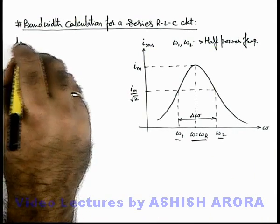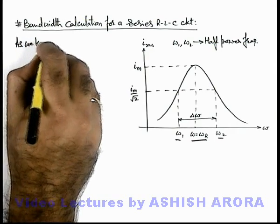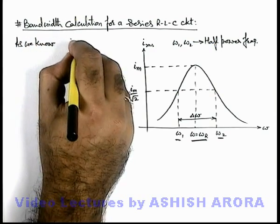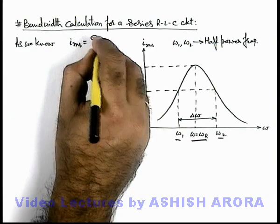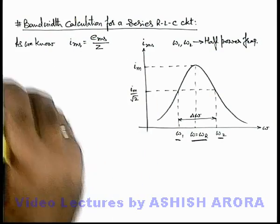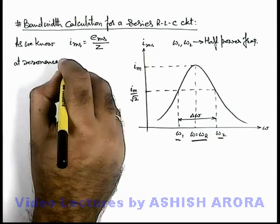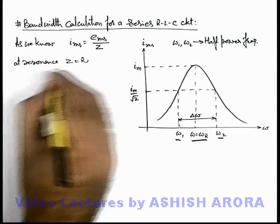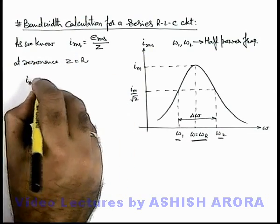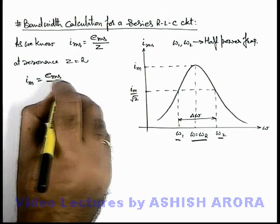As we know, in a series R-L-C circuit always the RMS current is written as E RMS by Z. And if we calculate at resonance, we can write the value of Z is equal to R, and the maximum current in circuit is E RMS by R.